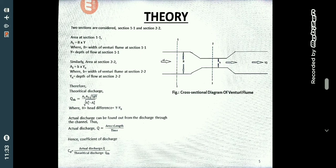Theoretical discharge can be found using the equation: A1 into A2 root over 2GH divided by square root of A1 square minus A2 square, where H is the head difference.